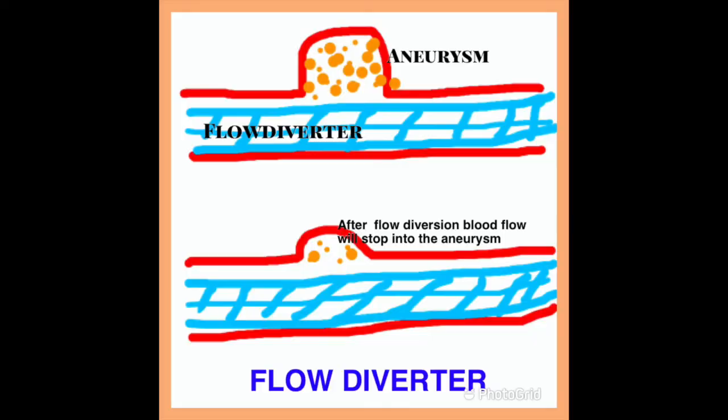Flow diverters are an advanced minimally invasive procedure done in the cath lab, similar to endovascular coiling. Micro catheters and guide wires are used to access the aneurysm. A metallic mesh is placed across the aneurysm, a clot forms within the aneurysm, and the aneurysm is sealed to prevent rupture.